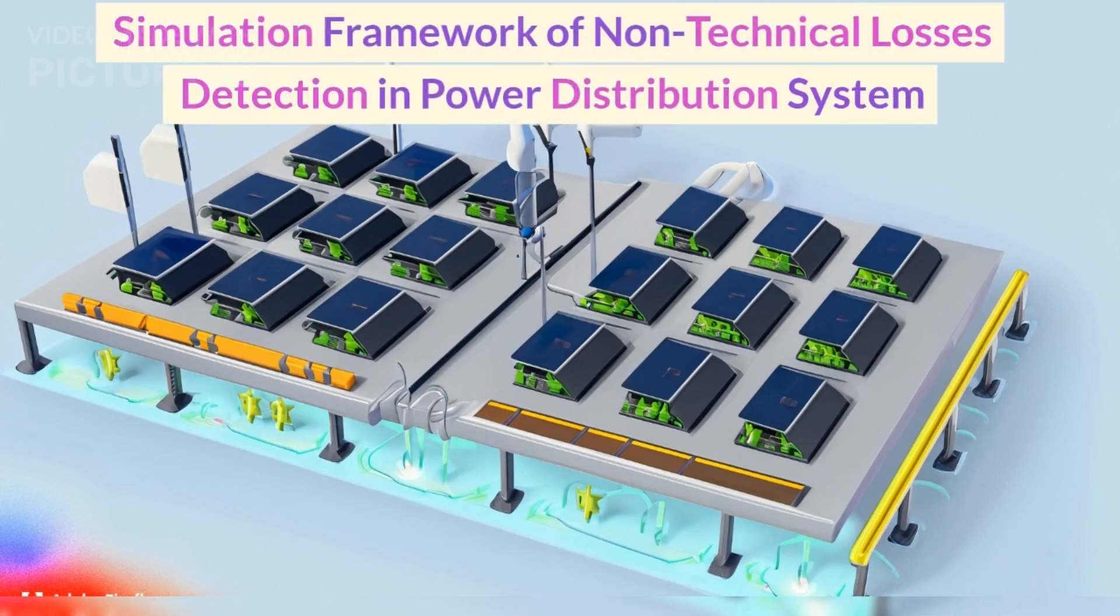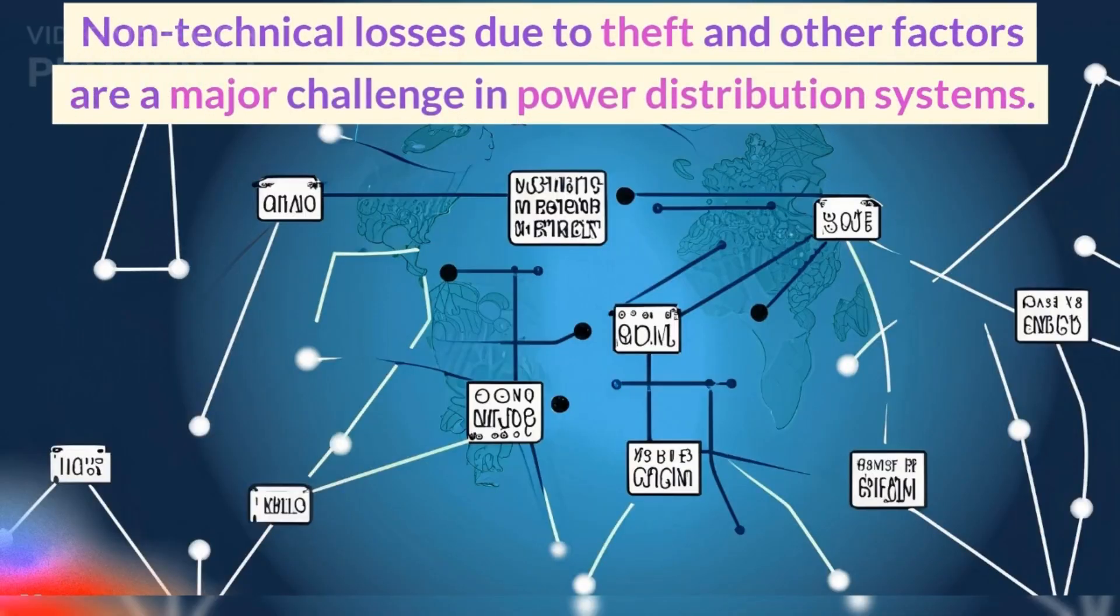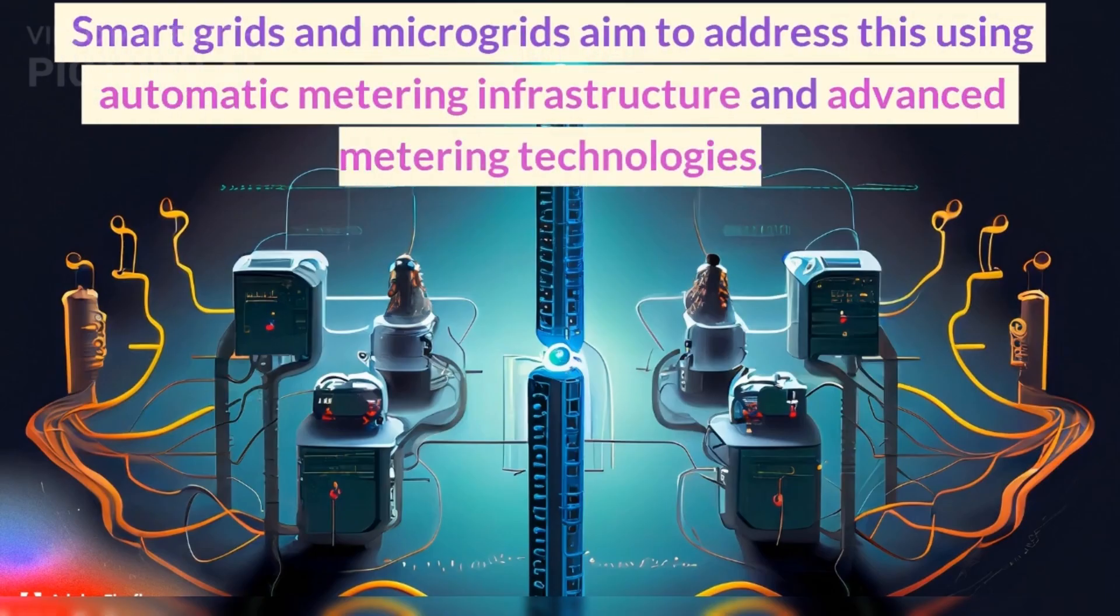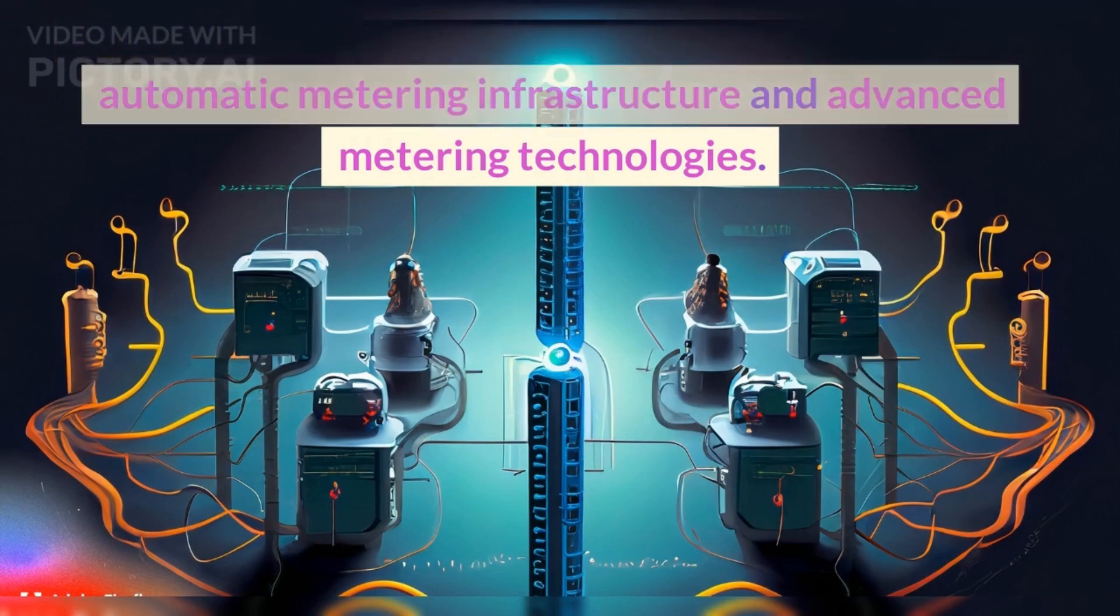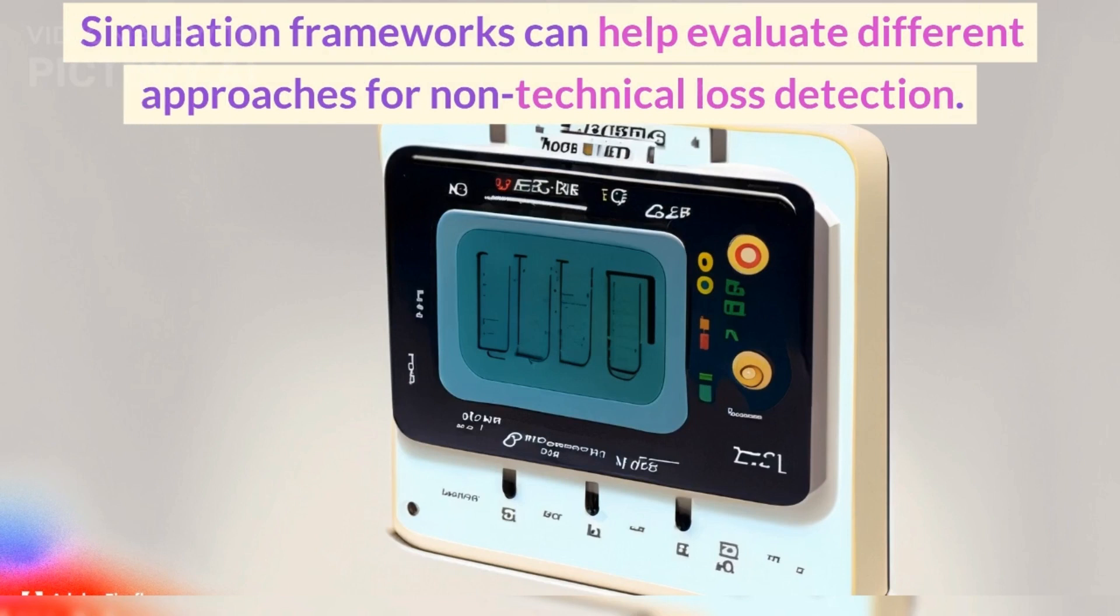Simulation Framework of Non-Technical Losses Detection in Power Distribution System. Non-technical losses due to theft and other factors are a major challenge in power distribution systems. Smart grids and microgrids aim to address this using automatic metering infrastructure and advanced metering technologies. Simulation frameworks can help evaluate different approaches for non-technical loss detection.